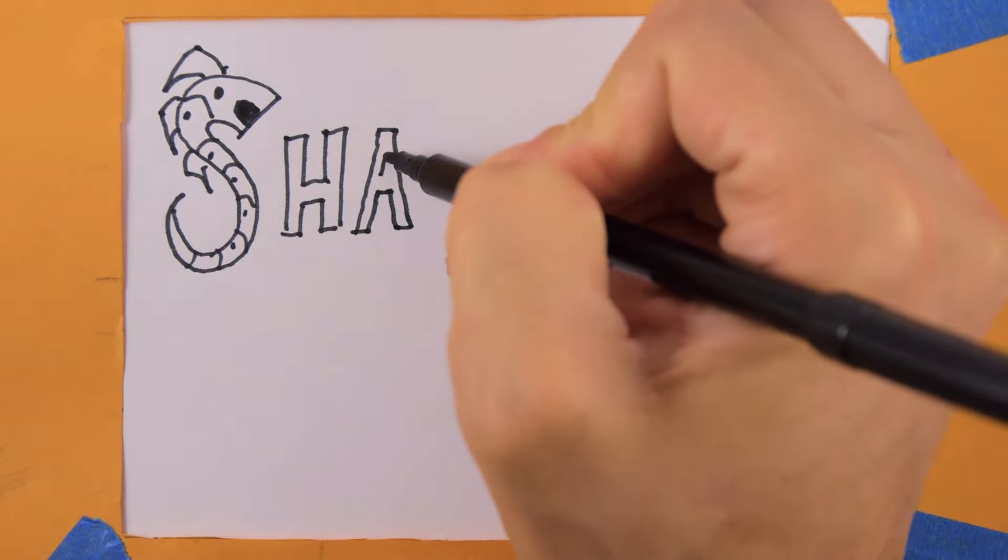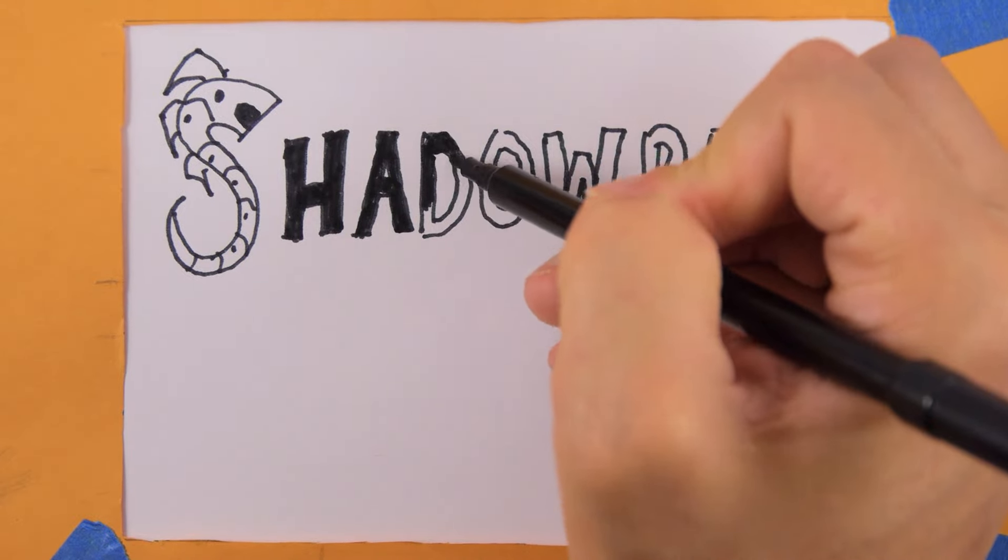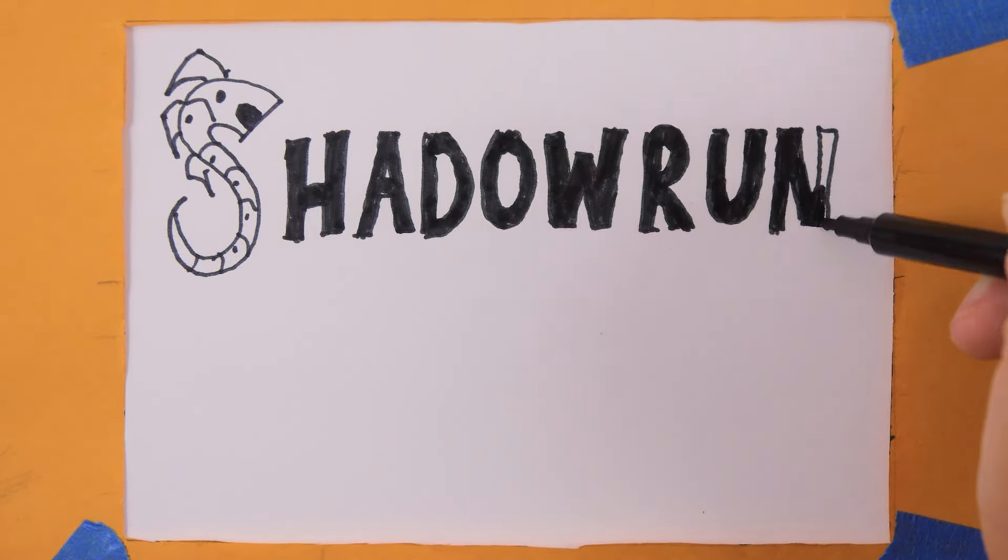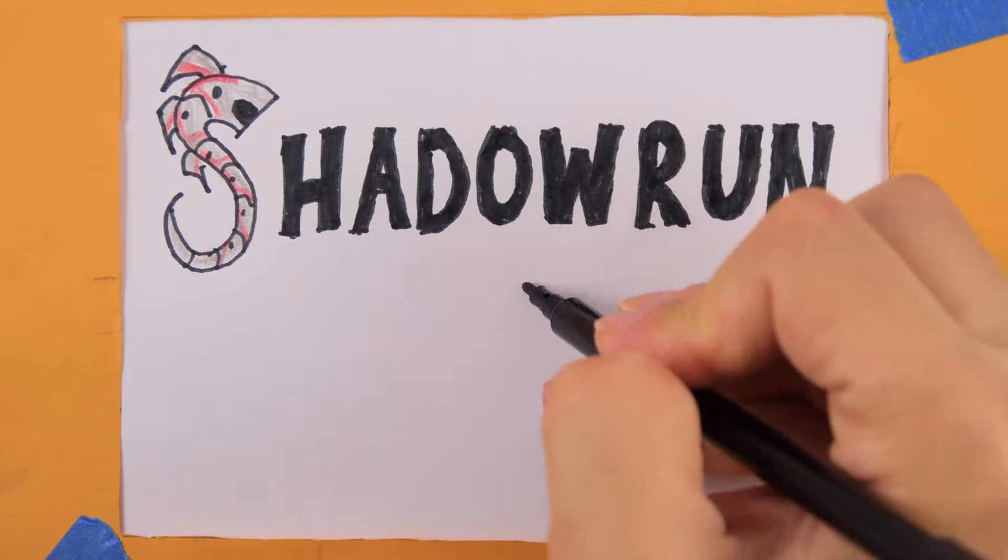When the going gets tough, the tough goes shopping. Runners are going to need to buy new toys and upgrades to their gear from time to time, and anything worth buying is going to have to be purchased on the black market.